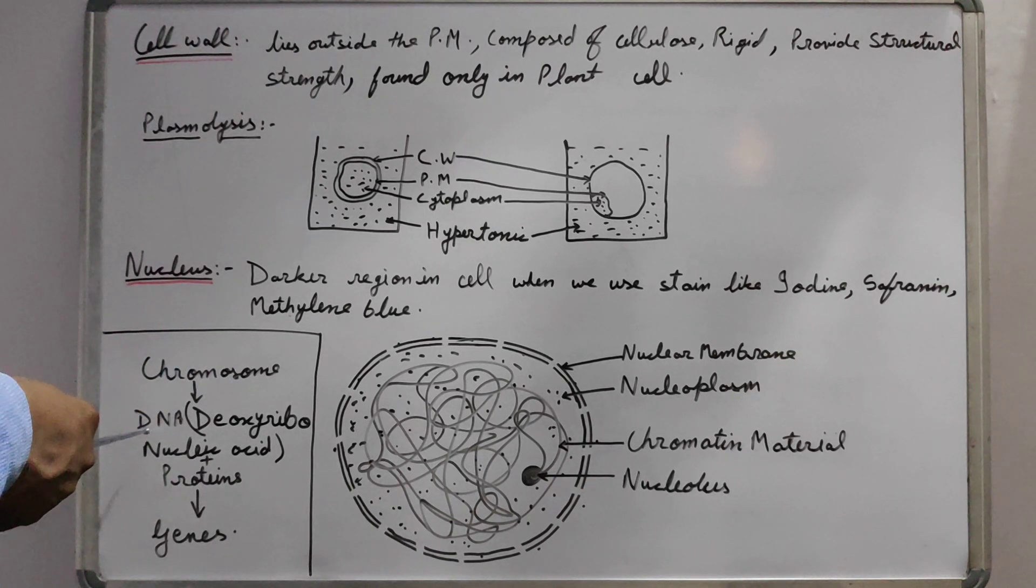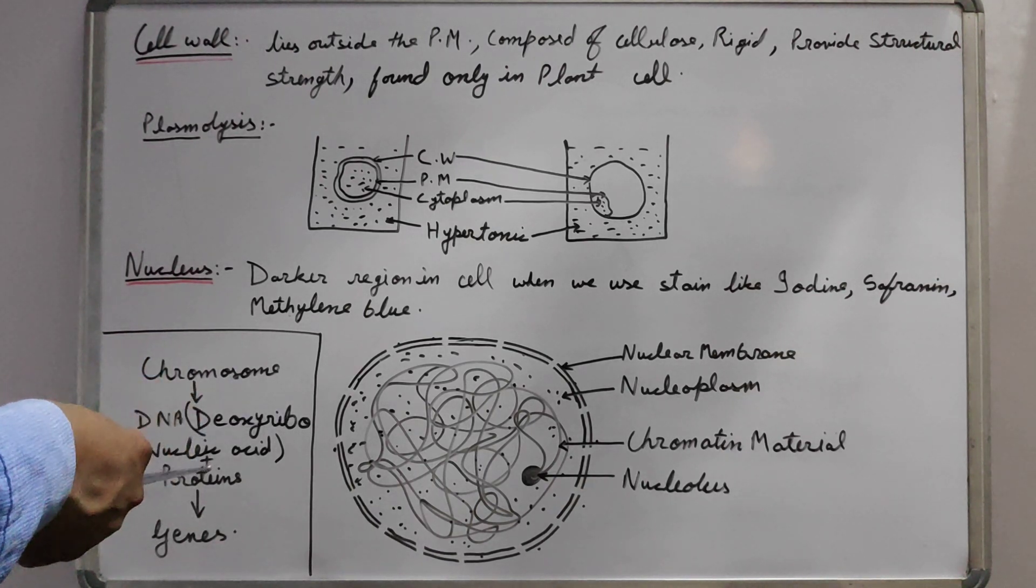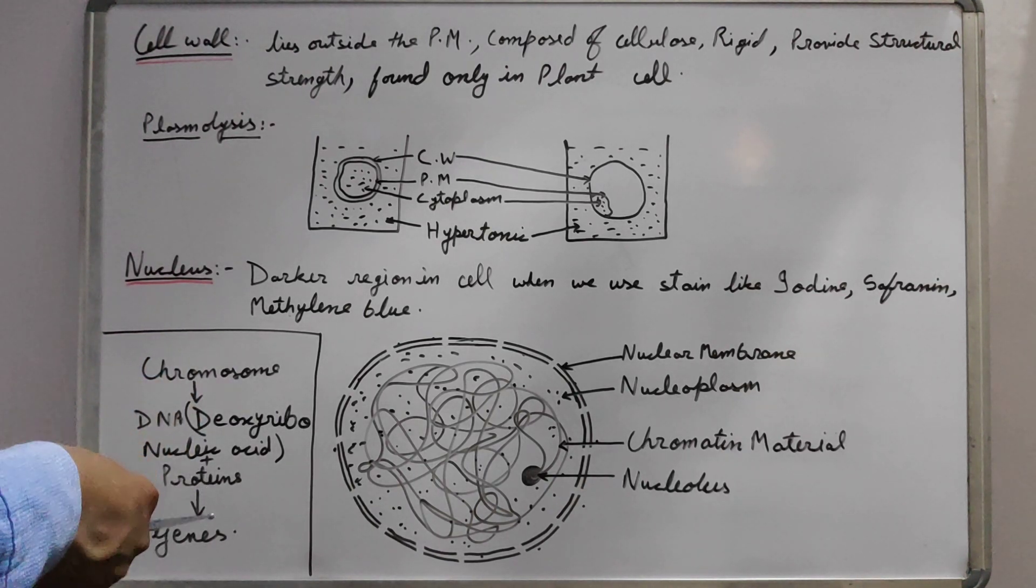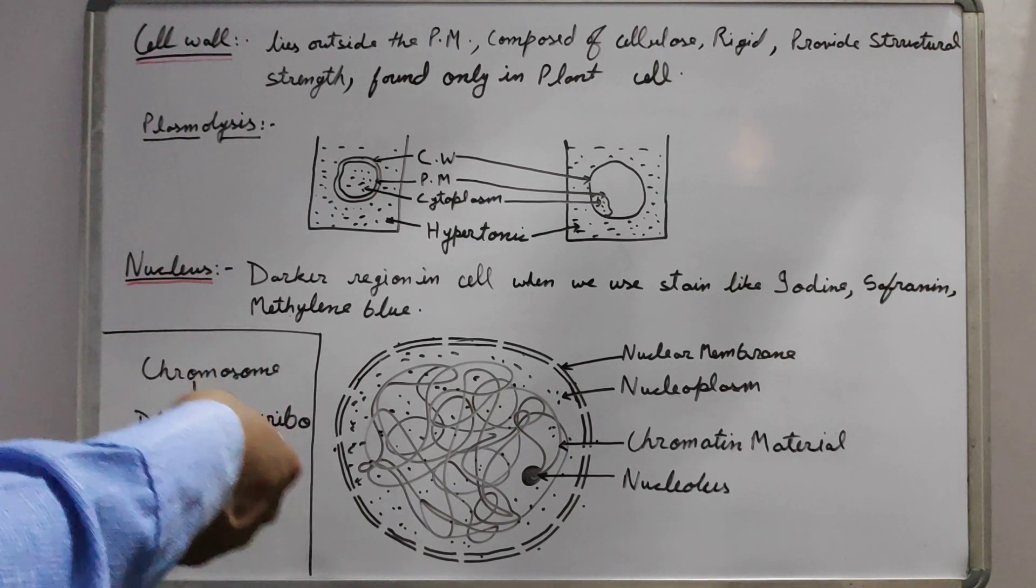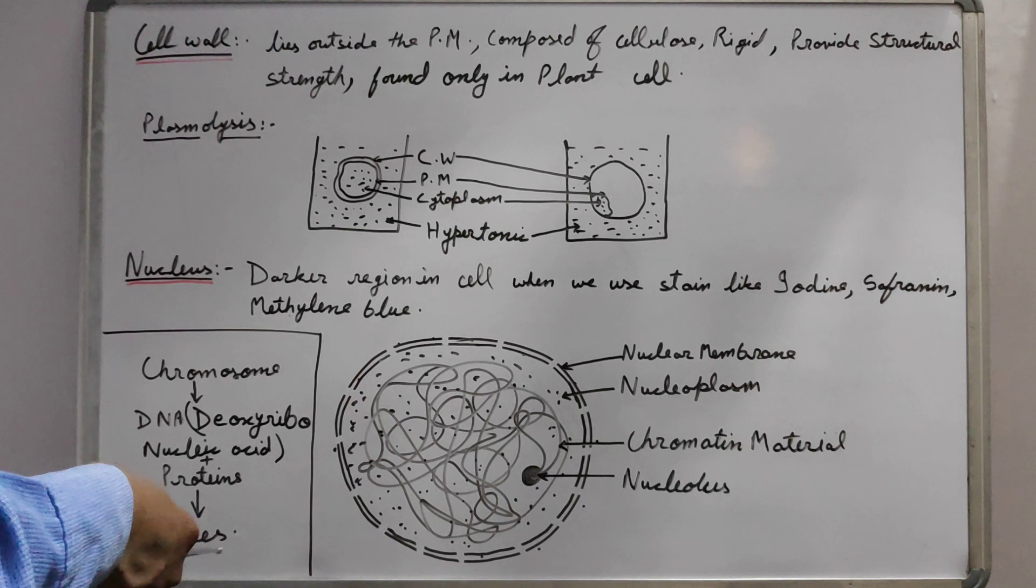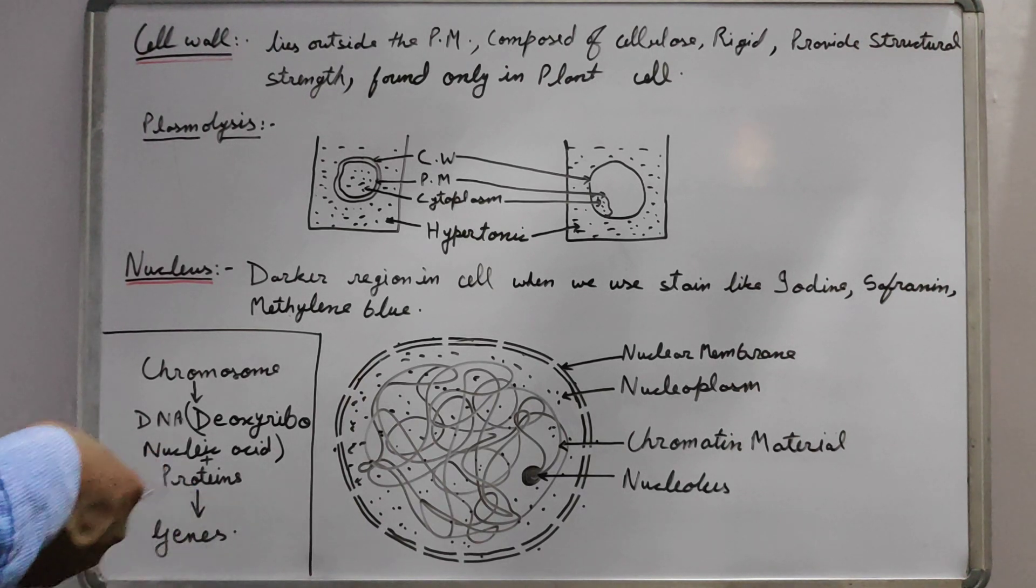These chromosomes are made up of DNA which is deoxyribonucleic acid and protein. The subunit of the DNA is the gene. That means the basic unit for heredity is the gene.